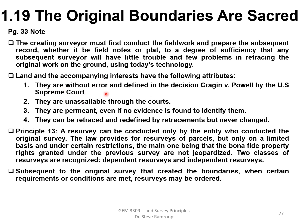Land and its accompanying interests have the following attributes: they are without error — once a track of land is surveyed for the first time, it is without error; they are defensible through the courts; they are permanent even if no evidence is found to identify them; and they can be retraced and redefined by retracements but could never be changed.